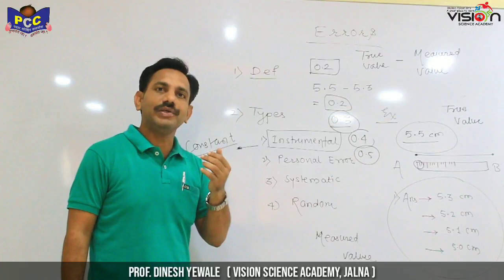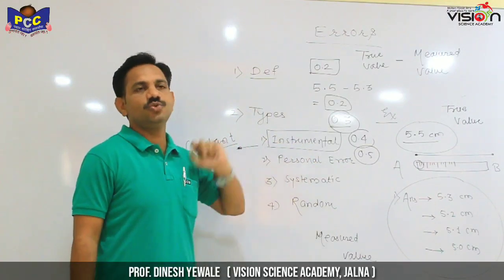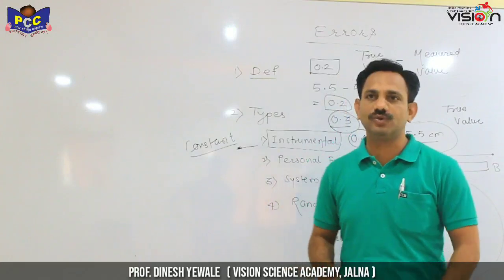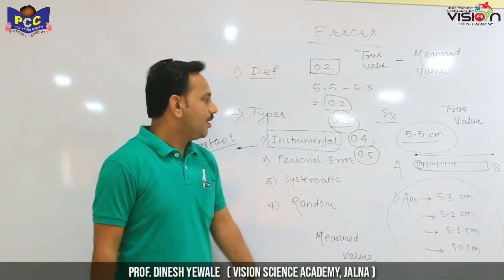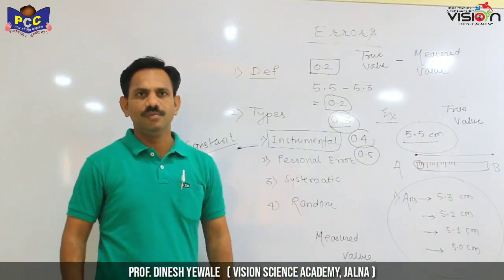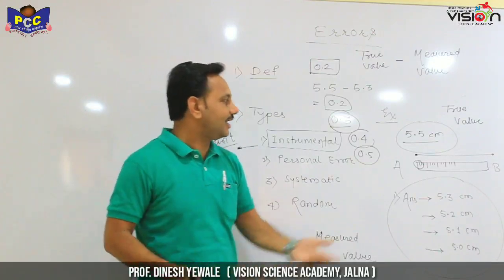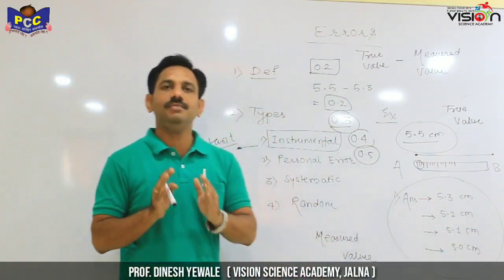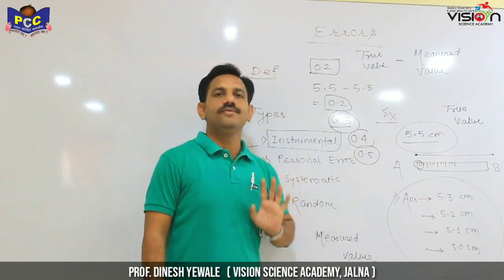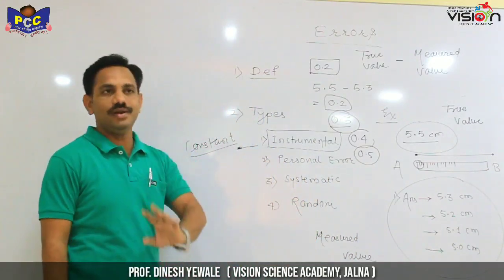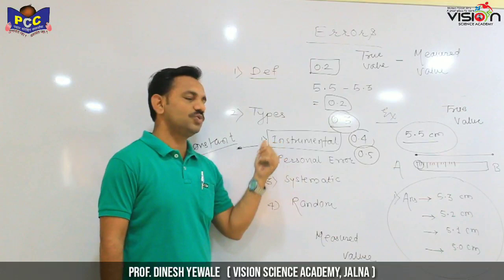If you want to remove a constant error, for example 0.5 kg, it is a constant error and the instrumental error can be removed. You can use multiple devices — measure with a first scale, a second scale, and a third scale — and take maximum readings to reduce the error. The basic point is instrumental error and how it is removed.